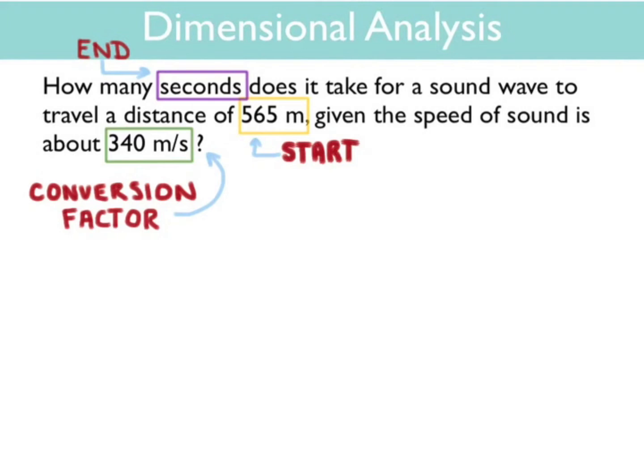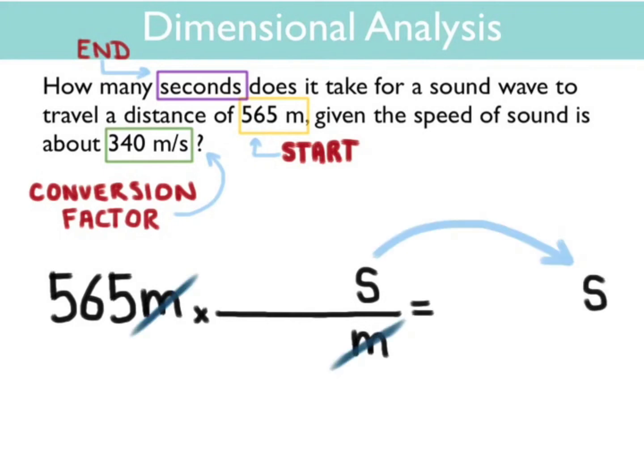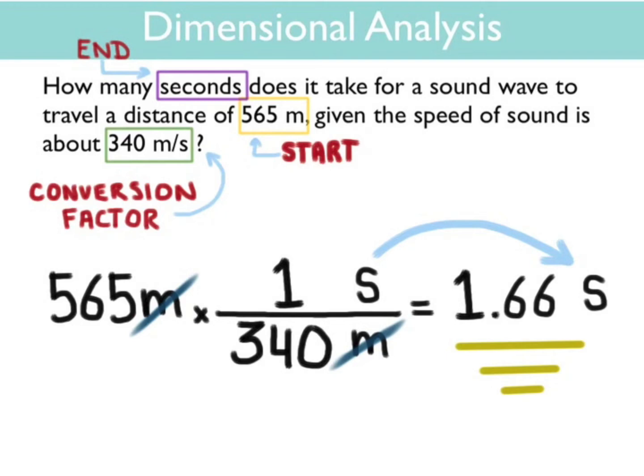Let's see how that looks. First write down the number that you're going to start with, in this case 565 meters. You're going to multiply this times the conversion factor seconds over meters. It's written this way so that the meters cancel. Notice that when you write it this way, you will be solving for seconds, which is exactly what you're trying to find. Now plug in the conversion factor in the appropriate way so that the units match up with the numbers. Notice that it's one second for 340 meters. When you divide by 340, you will have your answer in seconds. It takes 1.66 seconds for the sound wave to travel a distance of 565 meters. Congratulations! You just solved a physics problem.